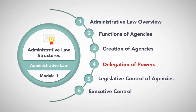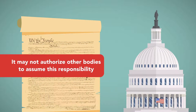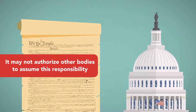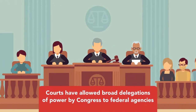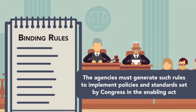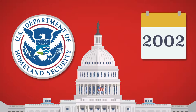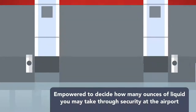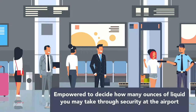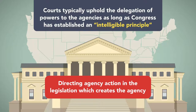Delegation of Powers. Constitutionally, only Congress is authorized to enact federal law; it may not authorize other bodies to assume this responsibility. This is known as the non-delegation doctrine. Even so, the courts have allowed broad delegations of power by Congress to federal agencies to allow them to impose binding rules, under the theory that the agencies must generate such rules to implement policies and standards set by Congress in the enabling act. For example, while Congress established and authorized the creation and operation of the Department of Homeland Security, its subsidiary agency the TSA is empowered to decide how many ounces of liquid you may take through security at the airport. Courts typically uphold the delegation of powers to the agencies as long as Congress has established an intelligible principle directing agency action in the legislation which creates the agency.